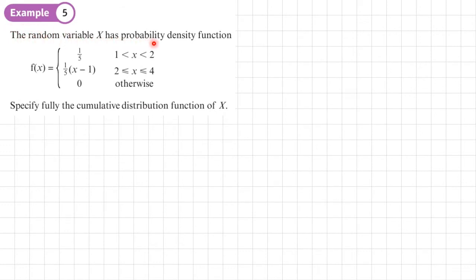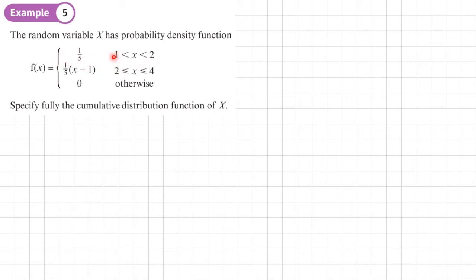Example 5: the random variable X has a piecewise probability density function — between one and two, the probability is 1/5; between two and four, the probability is (1/5)(x − 1); and zero otherwise. The question asks us to specify fully the CDF. Since probabilities don't start until x = 1, for x less than or equal to one, the cumulative probability is zero.